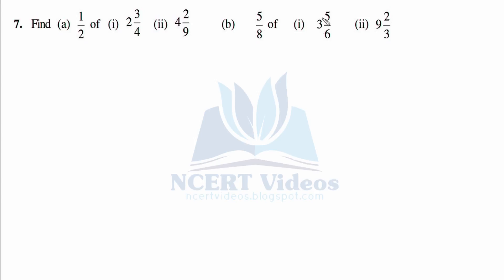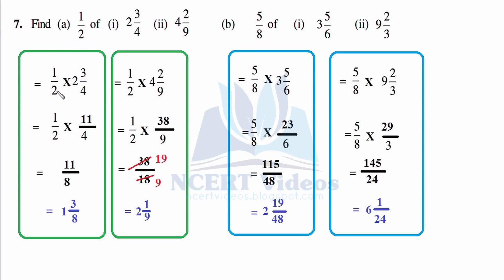Question seven: same thing but with mixed fractions. For the first part: one over two times (2 and 3/4) — open: four two is eight plus three = eleven over four. Now eleven over eight — eight ones are eight, remainder three — one and three over eight. For the next: (4 and 2/9) times something — open: nine four is thirty-six plus two = thirty-eight over nine. Cutting: nine to eighteen, nineteen to thirty-eight — remainder one — two and one over nine.